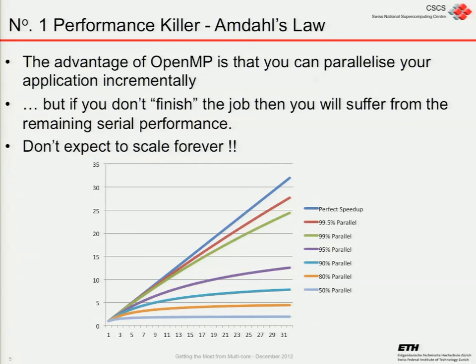Amdahl's law is our number one performance killer as we move forward, because it means we have to do more and more parallelism out of our applications — something we wouldn't have bothered with before, but essential as we move into the massively multi-core era, as we'll hear about with the Xeon Phi.